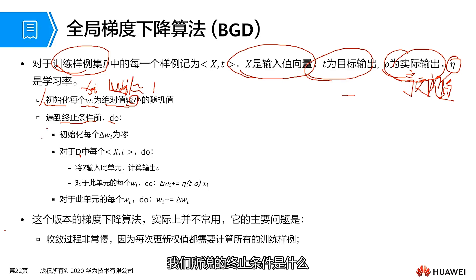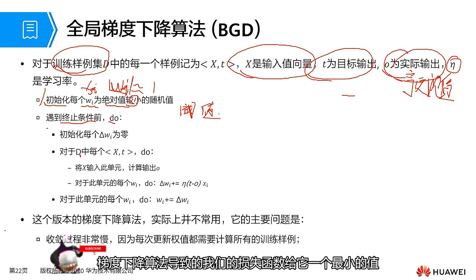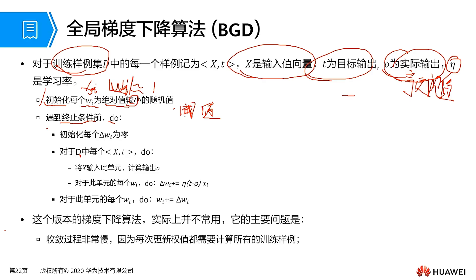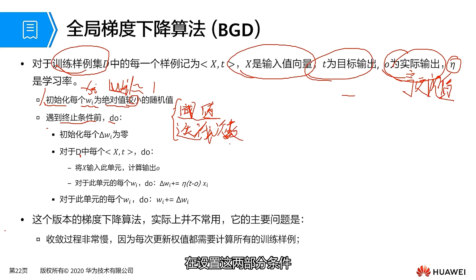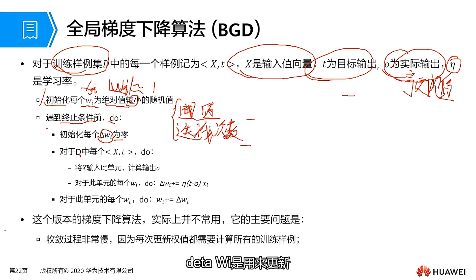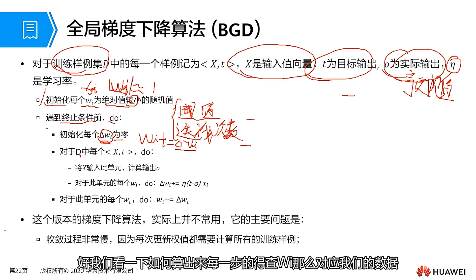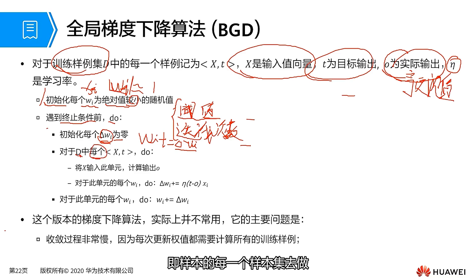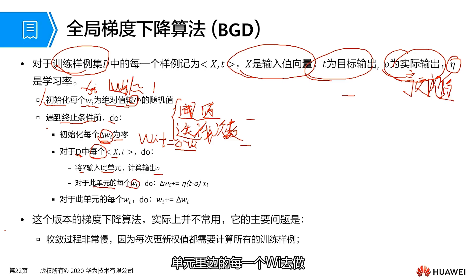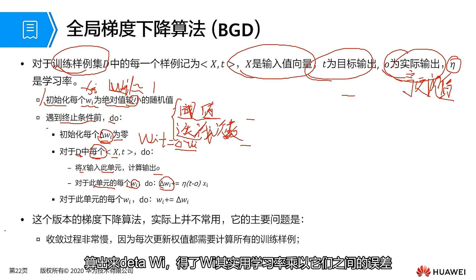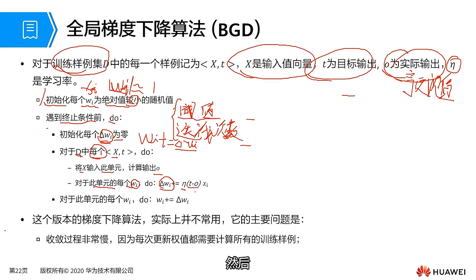Before we encounter the termination condition, we proceed through iterations. The termination condition is essentially a threshold: we let the gradient descent algorithm reduce the loss function to a minimum value, and we set the number of iterations. Inside the loop, the first step is to set delta WI to zero. Delta WI is used to update WI, meaning WI is updated as WI plus delta WI. For each sample in the dataset, we input it into our unit, calculate the actual output, and compute delta WI as the learning rate multiplied by the error, then multiplied by the current xi.